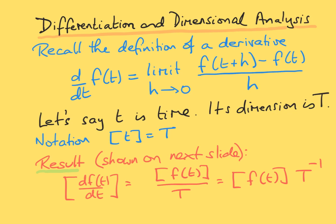To talk about dimensional analysis and differentiation, let's assume that t is something physical — specifically, t is time. The dimension of time we write as capital T. Capital L is for length and capital M for mass. The notation widely used is to put a square bracket around something such as t, and that denotes the dimension of the quantity. So the dimension of t is capital T.